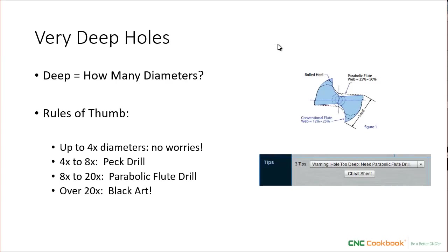What about very deep holes? In CNC and machining work, 'deep' is defined by how many diameters the hole is deep. If your hole is four diameters or less deep — with a half-inch twist drill, that'd be two inches or less — no worries, just drill straight down and retract when you reach the bottom. From four to eight diameters deep, you need to do what's called peck drilling, where the drill goes down a ways, retracts a little bit, goes down further, retracts, goes down further, retracts. CNCs do this really well. There are a lot of different peck drilling cycles depending on how deep you want to go, so do a little research on peck drilling before you attempt it.